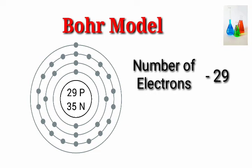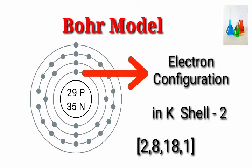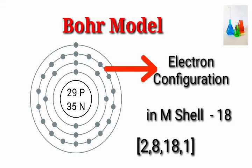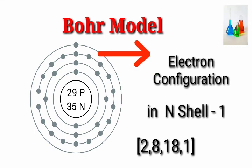Number of electrons: 29. Electron configuration — K shell: 2, L shell: 8, M shell: 18, N shell: 1.